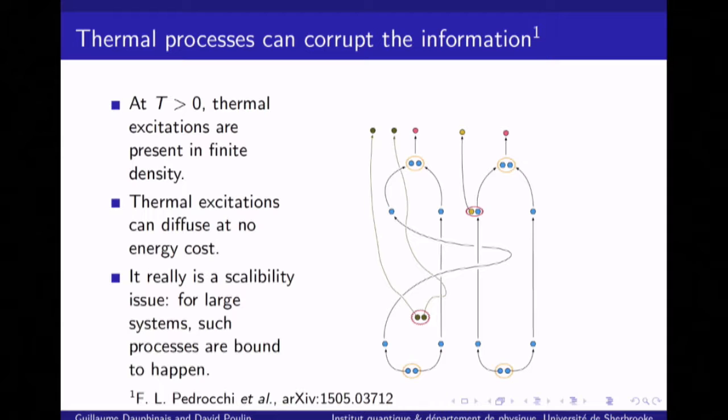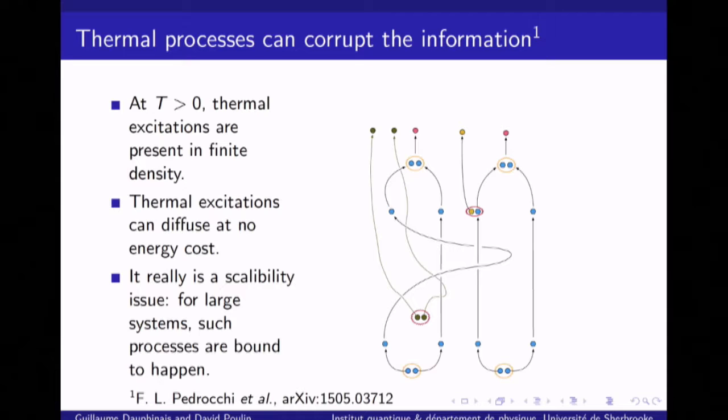However, there are processes that can corrupt your computation. Your system may be coupled to a bath, and thermal excitations can appear. There's an energy cost associated with creating them, but once created, these excitations can diffuse with essentially no energy cost. They can do non-trivial braiding with your computational anyons and cause fusion processes — all of which can mess with the computation. You could try to lower the temperature, but it's a scalability issue: once you want a large computation, you have a finite density of excitations that will disrupt what you're trying to do.